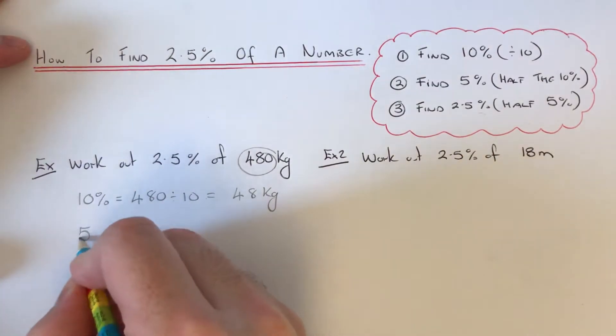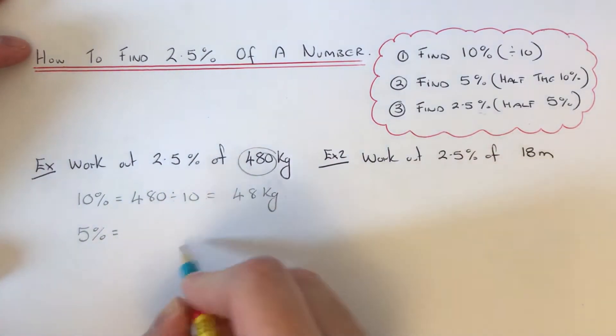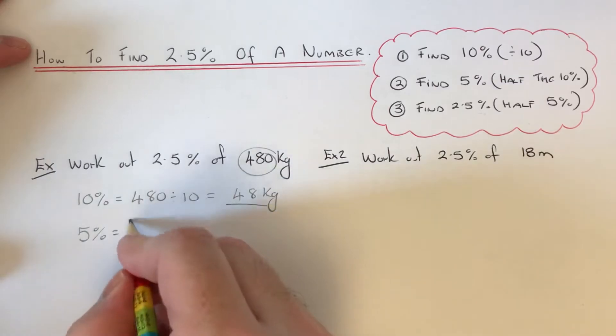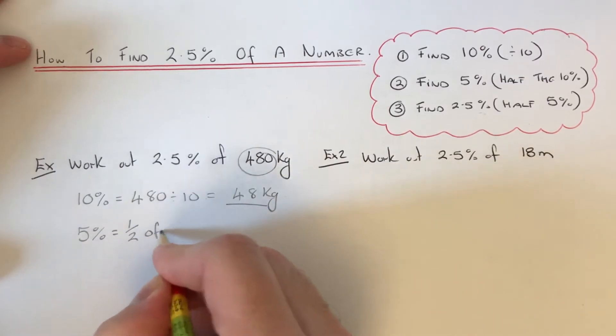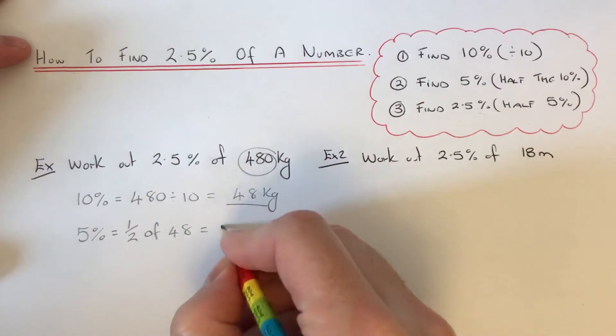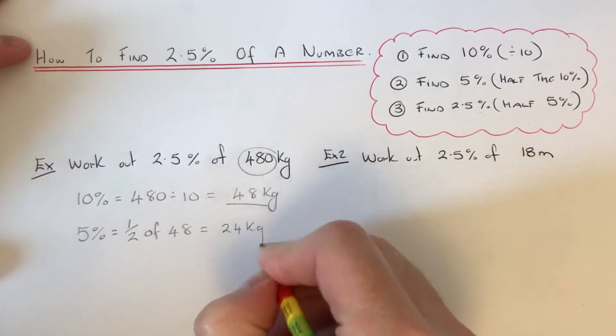Then we work out 5%. To get 5%, we half the 10% amount. So half of 48 is 24 kilograms.